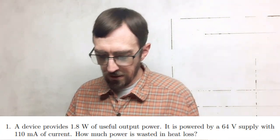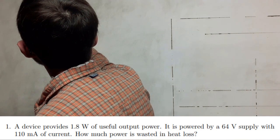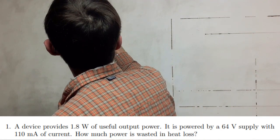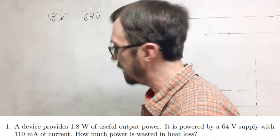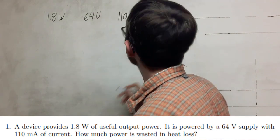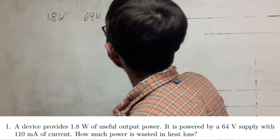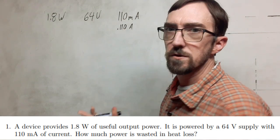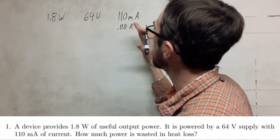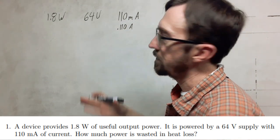The first problem we're going to look at: we have a device producing 1.8 watts of output. I like to write down my givens and pull them out of the problem. We have a 64 volt power supply and 110 milliamps of current. We want to convert this to amps, so this is 0.110 amps. The significant figures for these givens are going to be two digits.